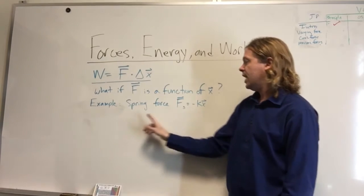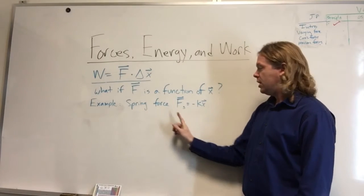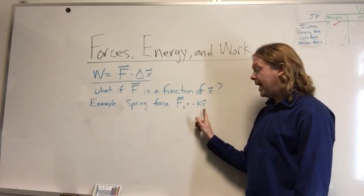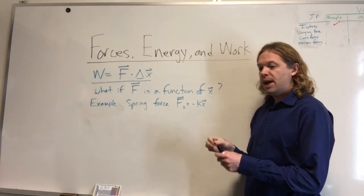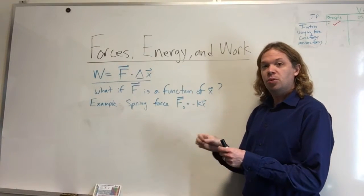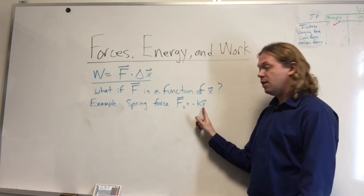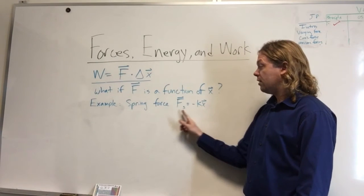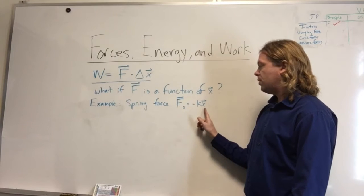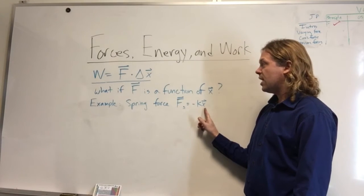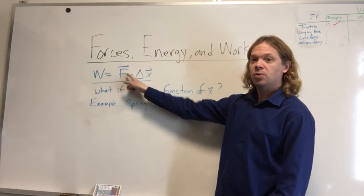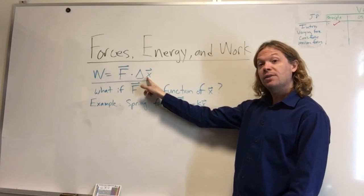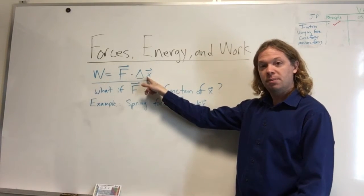Take a specific case: the spring force is negative kx. So the spring force depends on the position — how far you've pushed the spring in. This is the compression of the spring. As you push the spring in, the force gets bigger. So it's not clear where you should evaluate this force. What x should you put — the final x, the initial x, or somewhere in between?